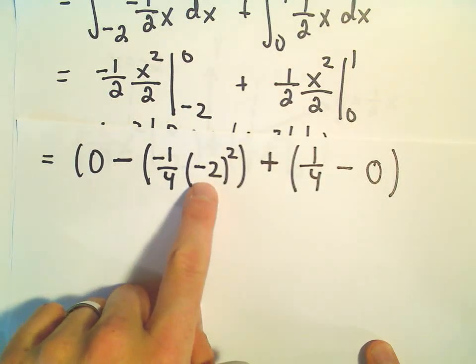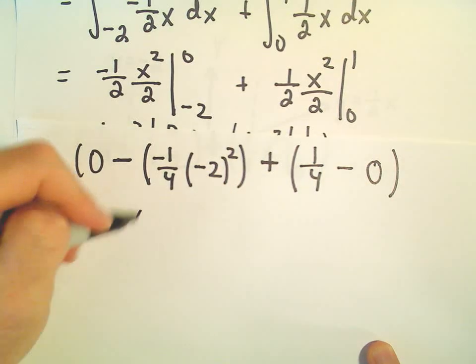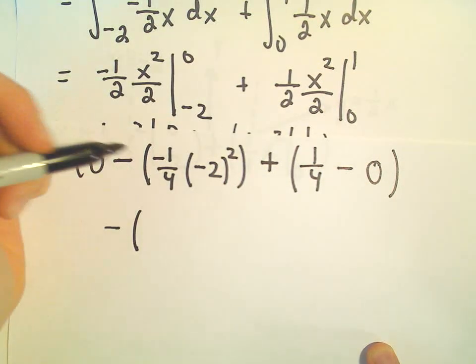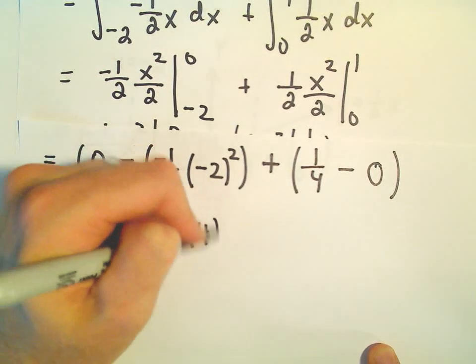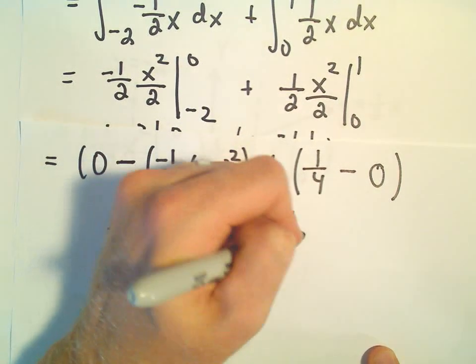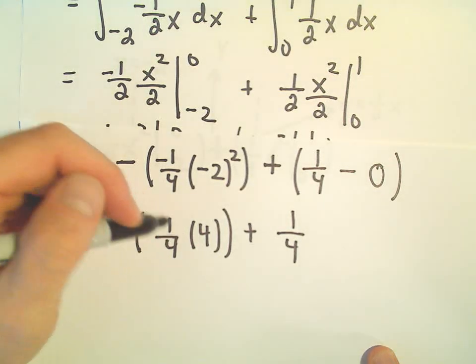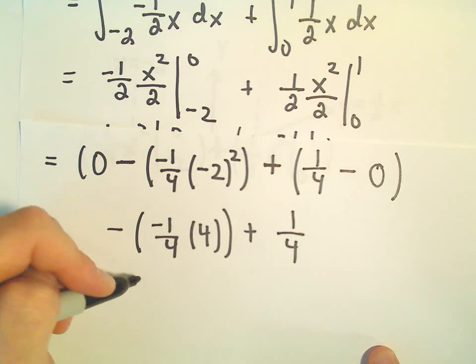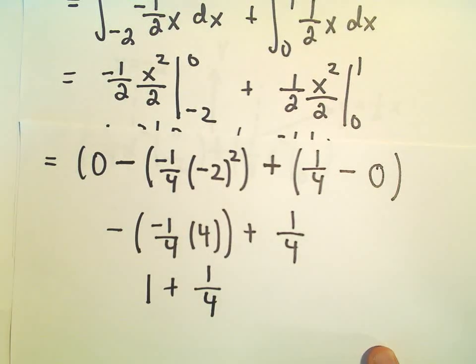So let's see here. Negative 2 squared is going to be 4. So we would have negative 1 fourth times 4. A lot of signs floating around here, so I'm going to take an extra second to make sure everything seems reasonable. Negative 1 fourth times 4 is going to give us negative 1 times another negative will give us a positive 1. So it looks like we have 1 plus 1 fourth.